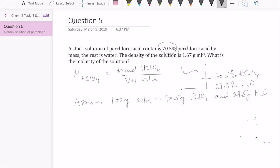And so we can use that information of mass to convert to number of moles of the perchloric acid, which is the numerator here. So let's calculate that out.